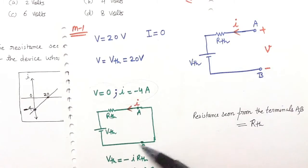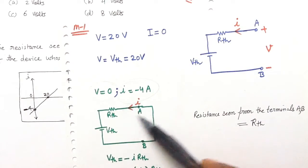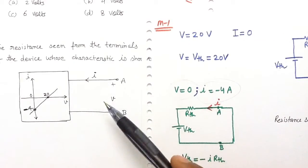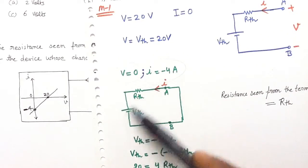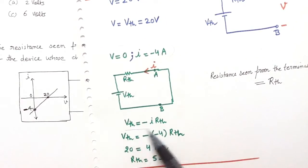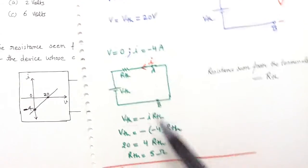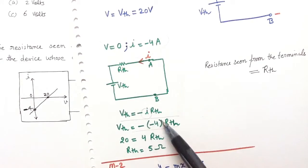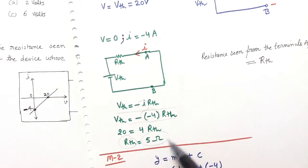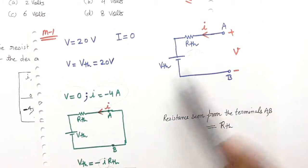If voltage is 0, then we can short the points A and B. The current is also flowing between the points A and B. I can write the value of I here and the value of RTH is 5 ohm, so the value of RTH is 5 ohm.